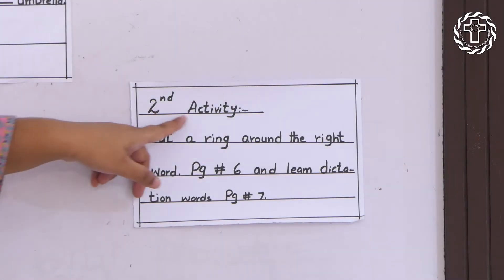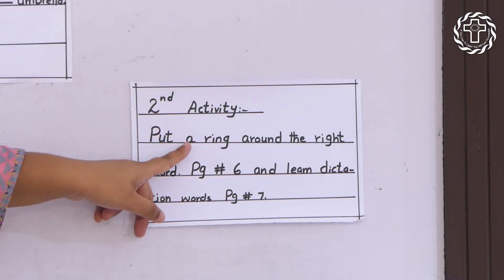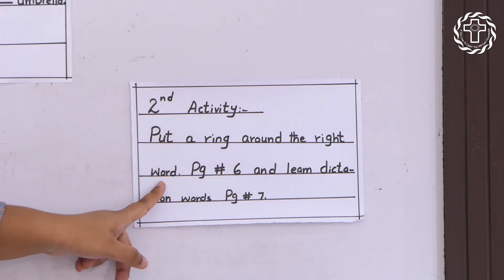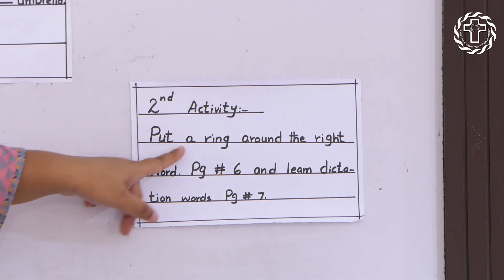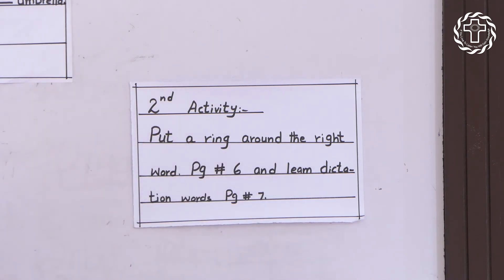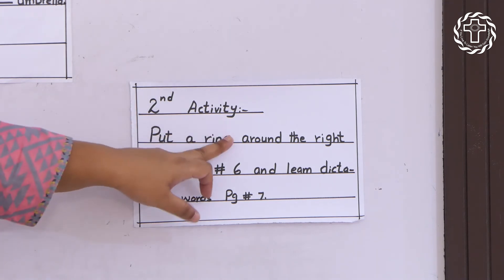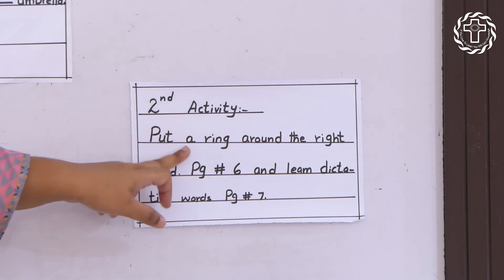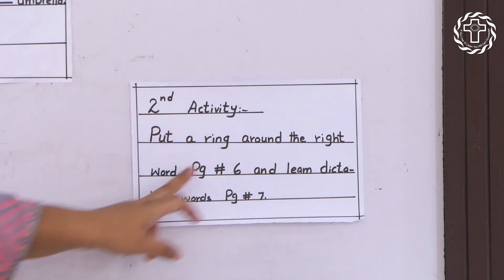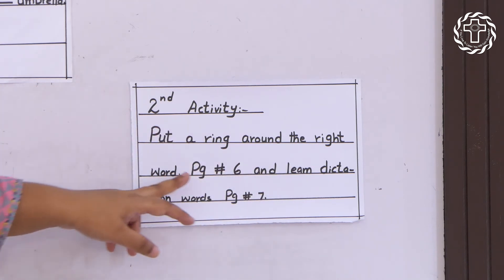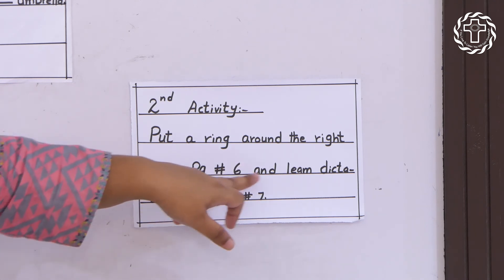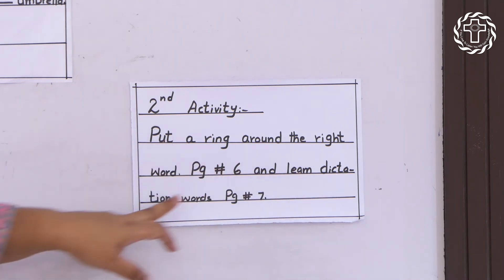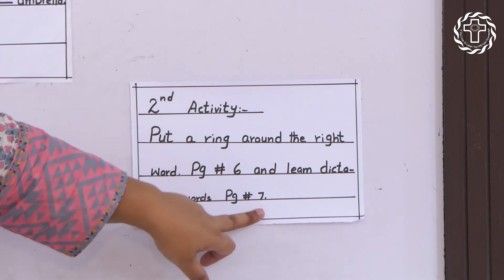This is your second activity: put a circle around the right word. The second activity is to put a ring around the right word, which is on page number six. And learn dictation words which is on page number seven.